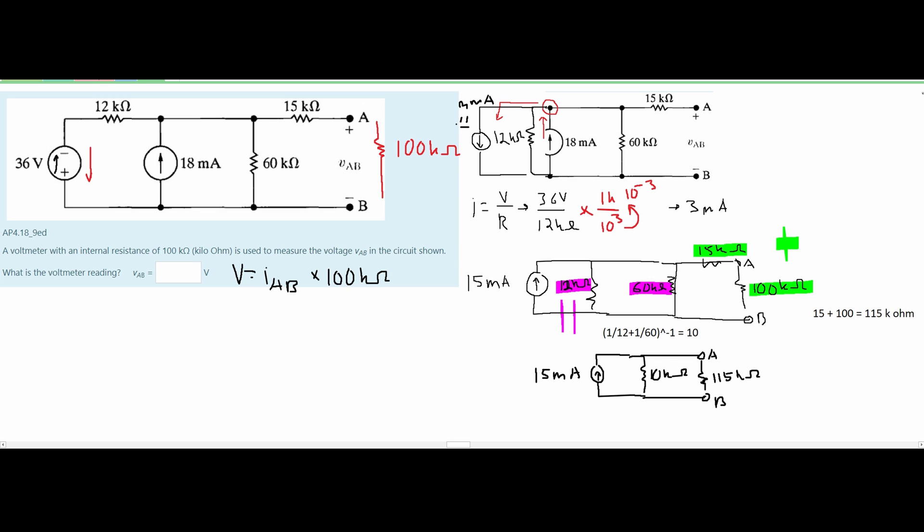Knowing all this we can look back into section 3.3 which has current division. We need to find the current of AB and to do this we're going to say I_AB is equal to the current across from it which we know to be 10 kiloohms.